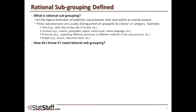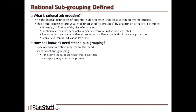So how do you know if you're going to need rational subgrouping? Well, special cause variation could reveal the need for rational subgrouping. If the same special cause tests tend to fail, then chances are that a subgroup could exist within the process. These refer to the special cause tests we've gone over before in a separate lesson for control charts, where you can test across eight different possible tests. If the same tests tend to be failing, there could be a subgroup that naturally exists that you need to account for when reviewing your data.